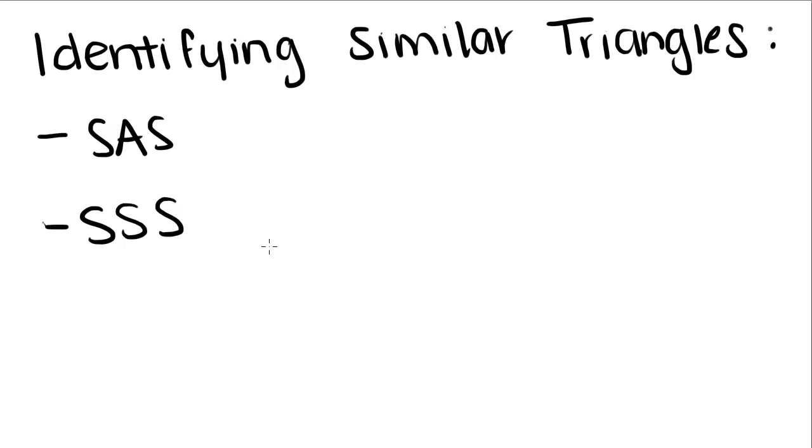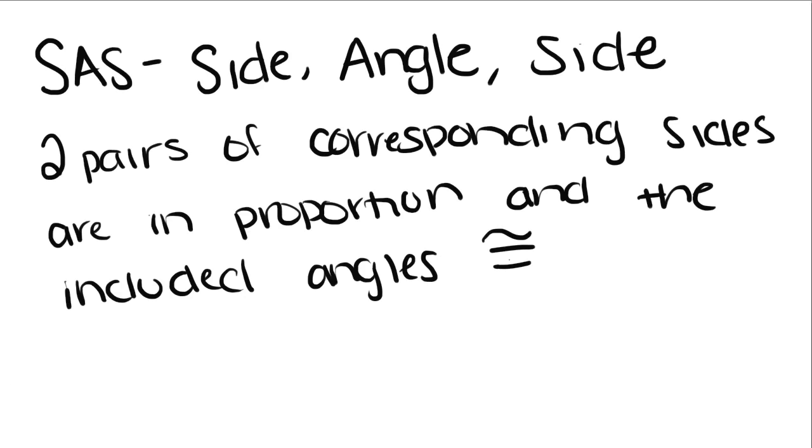Our focus today is on the two other ways to identify similar triangles, which are side-angle-side and side-side-side. Side-angle-side is when you have two pairs of corresponding sides that are in proportion and the included angles are congruent.